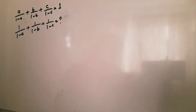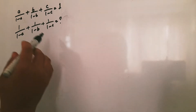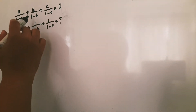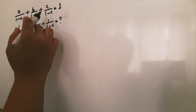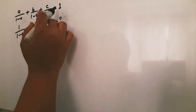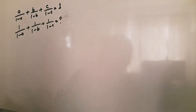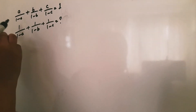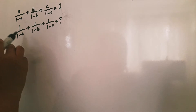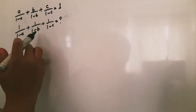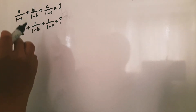Hey friends, today's question is: if A by (1 minus A) plus B by (1 minus B) plus C by (1 minus C) equals 1, then what will be the value of 1 by (1 minus A) plus 1 by (1 minus B) plus 1 by (1 minus C)?